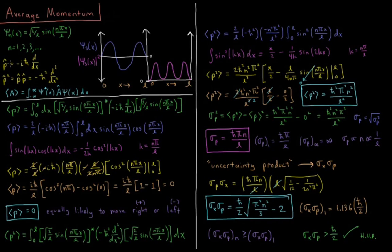Our momentum operator is minus i h-bar, where h-bar is h over 2π — specifically, negative i h-bar times the first derivative with respect to x. For momentum squared, that's applying the momentum operator twice, giving us minus h-bar squared times the second derivative with respect to x. Recall that the average value of a property is computed as the integral over all space of the complex conjugate of the wavefunction times the operator acting on the wavefunction — this is called the expectation value.